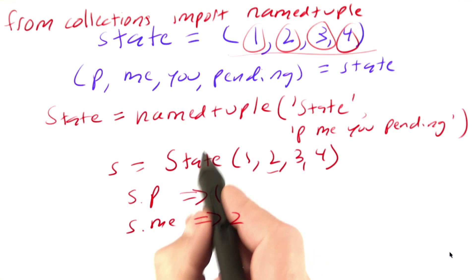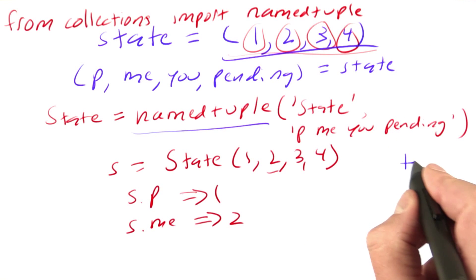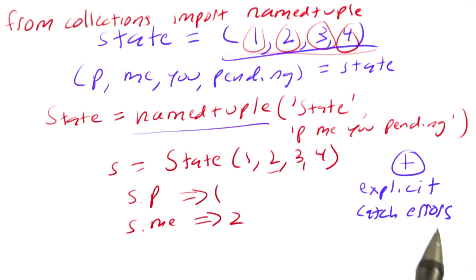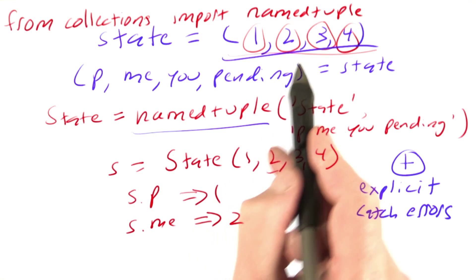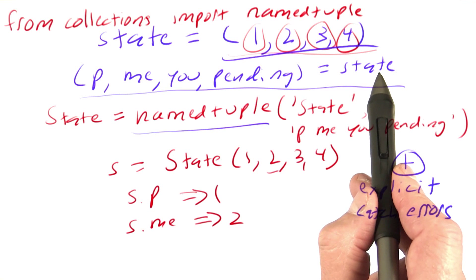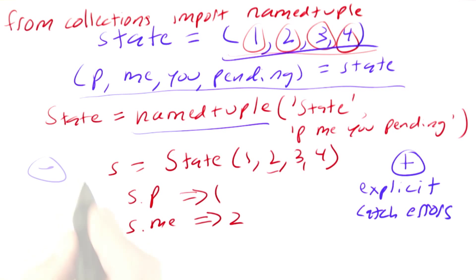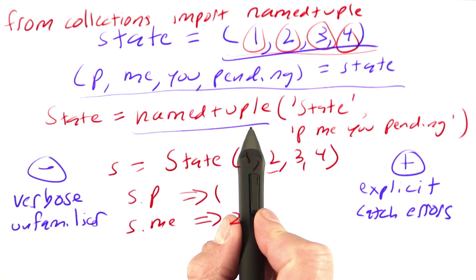So how would I choose between this representation for states and the normal tuple representation? The named tuple has a couple of advantages. It's explicit about the types and it helps you catch errors. If you ask for the p field of something that's not a state, that will give you an error, whereas if you just broke up something that was four elements into these components, that would work even if it didn't actually happen to be a proper state. There are a few negatives as well — it's a little bit more verbose, and it may be unfamiliar to some programmers, who may take a while to understand what named tuples mean.